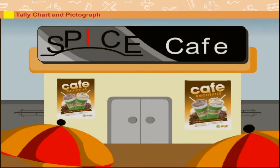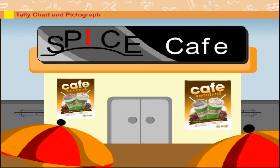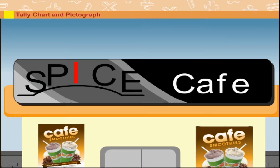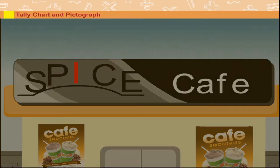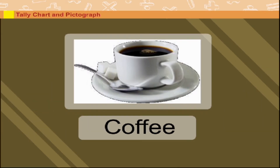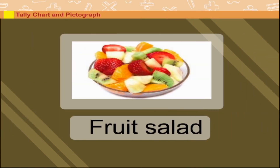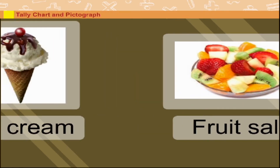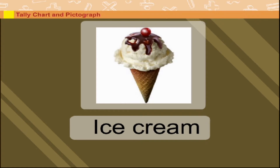Tally Chart and Pictograph. Sarket owns a cafe named Spice Cafe. The items sold in the cafe are Sandwich, Coffee, Fruit Salad, and Ice Cream.